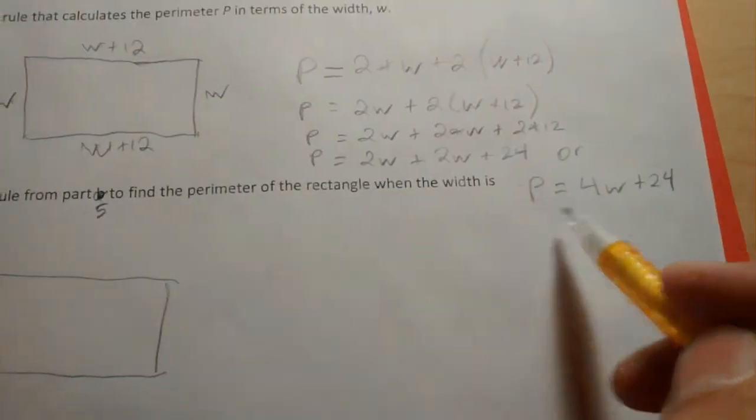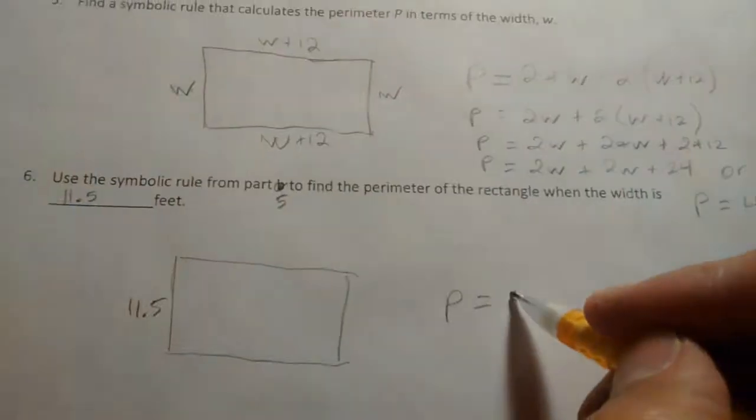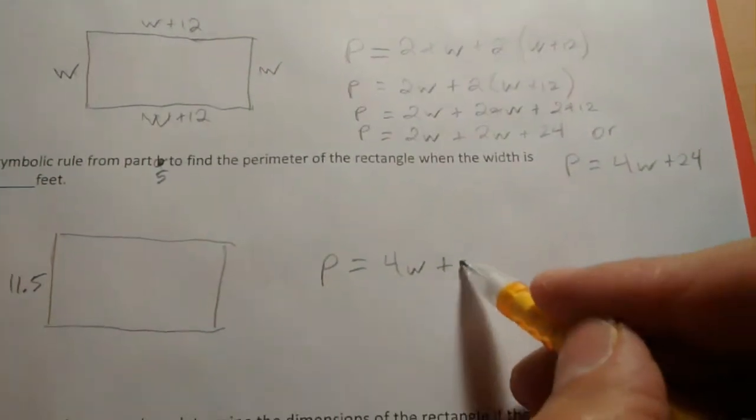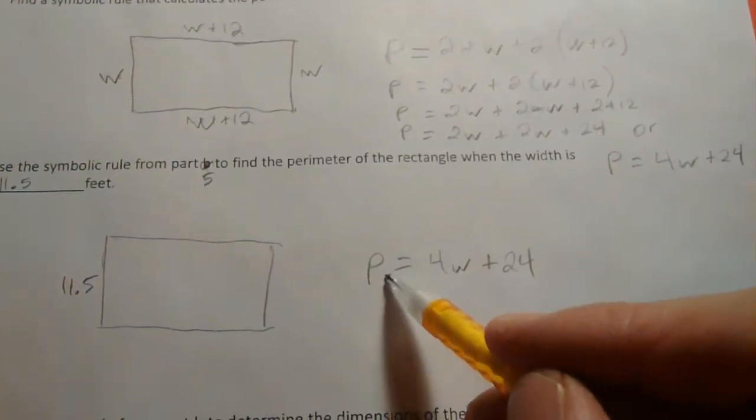Let's use solely this formula, not the diagram. To find the perimeter, we simply input the right variable here, W.